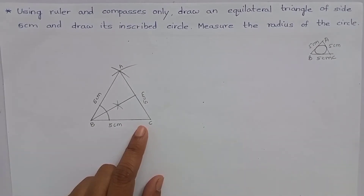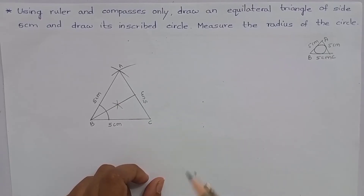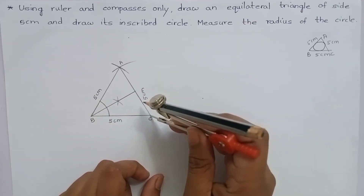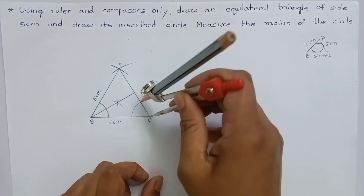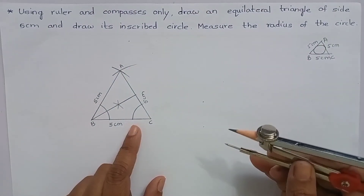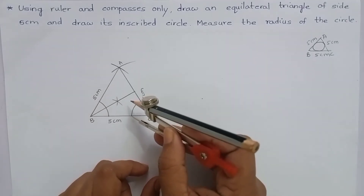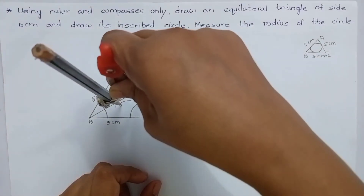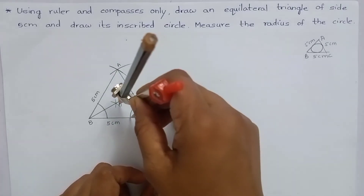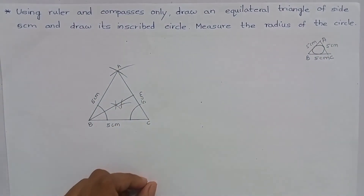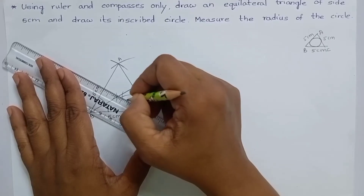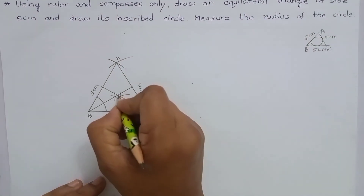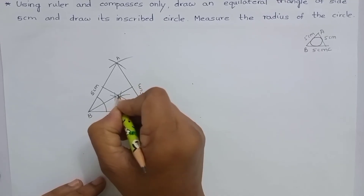Now let us do the angle bisector for angle C. Draw an arc by keeping the compass at point C. Keep the compass at each intersection point and mark arcs to cut each other. Join these two points. These two angle bisectors meet at this point — name this point as I.